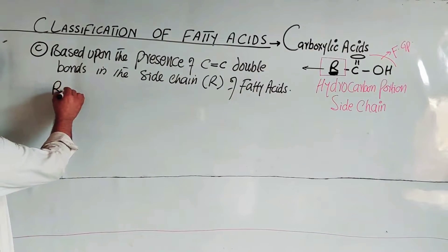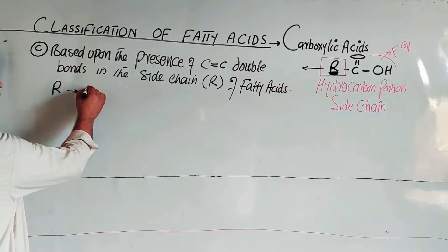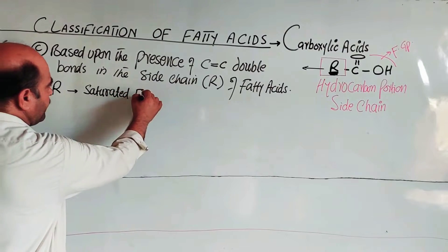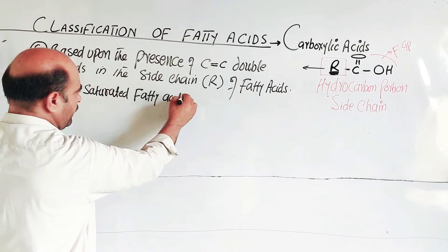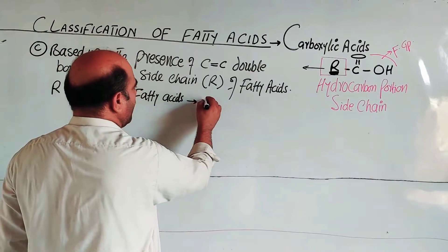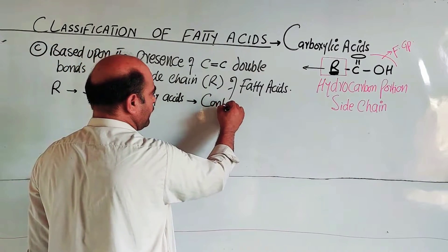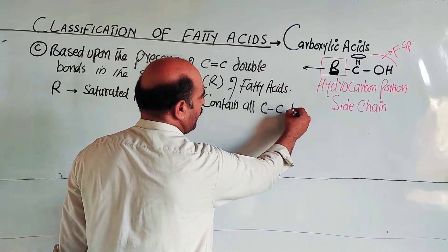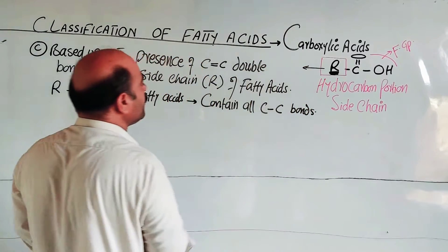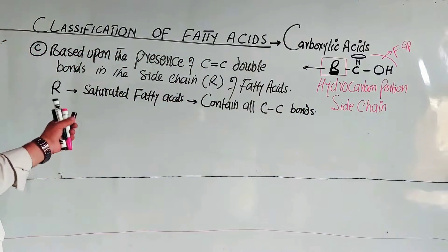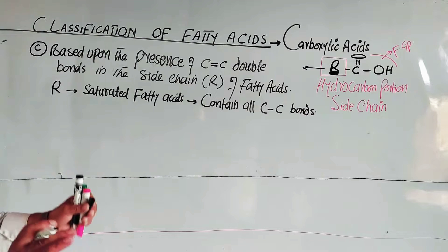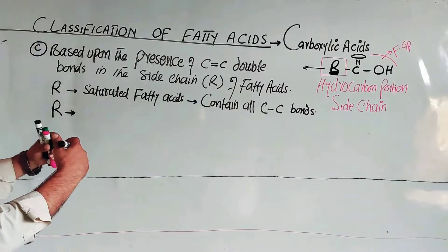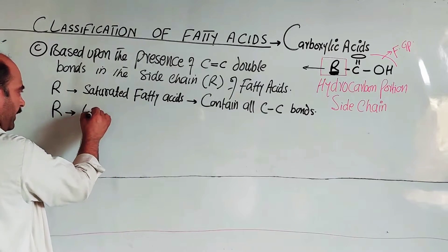Saturated fatty acids contain all carbon to carbon single bonds. If the R portion has at least one double bond or more than one double bond, then it is unsaturated.